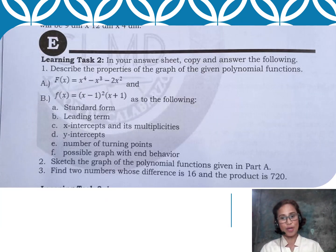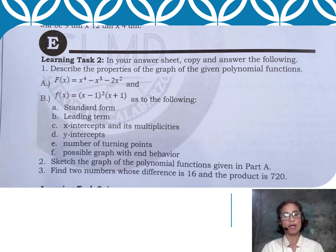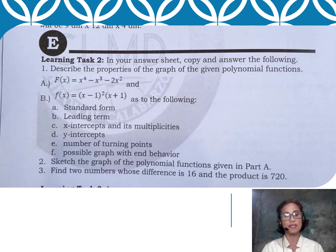Let's start with the instruction. In Learning Task 2, you have to write in your answer sheet the following: describe the properties of the graph of the given polynomial function f(x) = x⁴ - x³ - 2x² and f(x) = (x-1)² · (x+1). You have to provide: A - Standard Form, B - Leading Term, C - X-Intercepts, D - Y-Intercepts, E - Number of Turning Points, F - Possible Graphs, and the End Behaviors. To help you answer A to F, please watch my previous video, Polynomial Functions and Their Graphs — it will help you understand how to answer A to F.